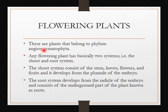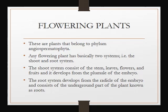A flowering plant has basically two systems — a shoot and a root system. The shoot system consists of the stem, leaves, flowers, and fruits, and it develops from the plumule of the embryo. A seed's embryo has two parts: one is the plumule, which gives rise to the stem and leaves, and the other is the radicle, which gives rise to the roots.